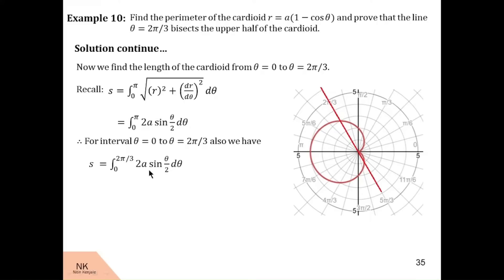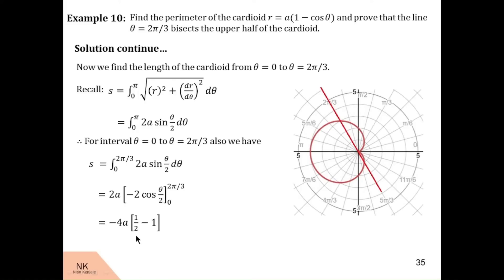Now let us evaluate this integral. 2a is constant, we will keep it outside. Integral of sin theta by 2 is minus cos theta by 2 upon 1 by 2, that is 2. This minus 2 goes out and becomes minus 4a. Now after substituting 2 pi by 3 in theta, we have cos of pi by 3. Cos pi by 3 is half, minus cos of 0 is 1. Half minus 1 is minus half. Minus half into minus 4a is just 2a. So we just proved that the line theta is equal to 2 pi by 3 bisects the cardioid in upper half. Hence proved.